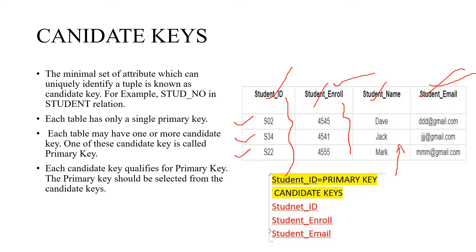Simply, a candidate key can be any column or combination of columns that can qualify as unique in a database. Each candidate key can qualify as a primary key. These three keys have qualifications similar to that of a primary key, but we have to choose only one primary key from the candidate keys. The definition of candidate key is: the minimum set of attributes which can uniquely identify a tuple in a relation.